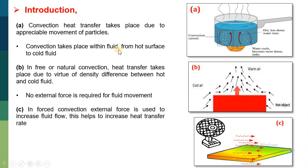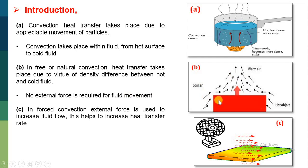Convection takes place within the fluid or from a hot surface to cold fluid. Here you can observe the heat is transferring from a hot object to the air. In free or natural convection, heat transfer takes place due to virtue of density difference between hot and cold fluid. No external force is required for fluid movement. Let's understand this diagram: if a hot object is placed on a plain surface, then naturally the air will move on the surface of this hot object and will absorb the heat by convection.